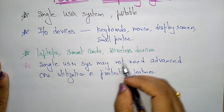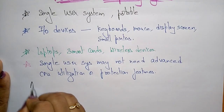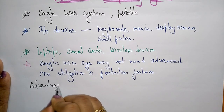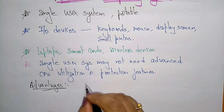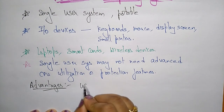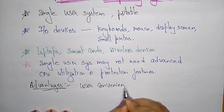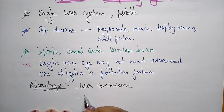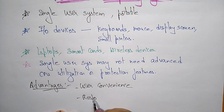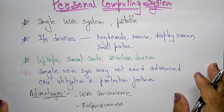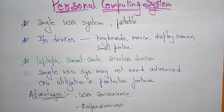The main advantages of using a personal computing system are user convenience and responsiveness. The responsiveness is also more when compared to other operating systems. This concludes the topic of personal computing systems.